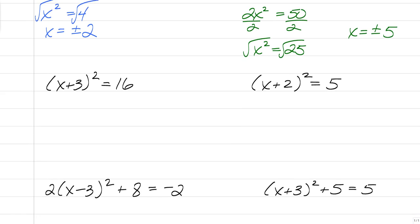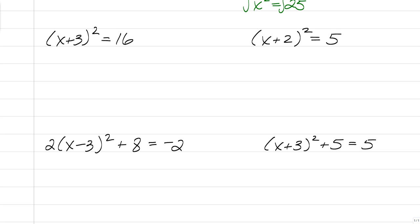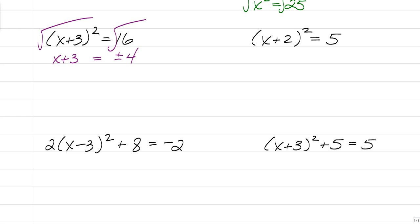Now we're going to square a quantity. In this example, we have a quantity squared. You cannot subtract 3 from both sides. You could multiply x plus 3 times itself to square it and get x squared plus 6x plus 9 is equal to 16, and then solve using another method. However, when we know that this is a perfect square, we can just square root right now. Once your parentheses squared are by themselves, you can square root and you're going to be left with x plus 3 is equal to plus or minus 4. It's very important to remember to include the plus or minus.